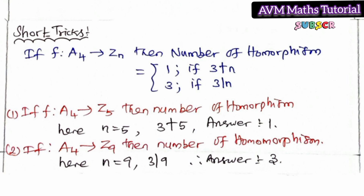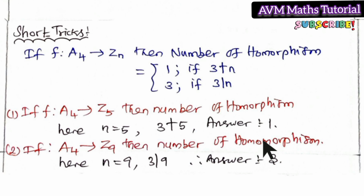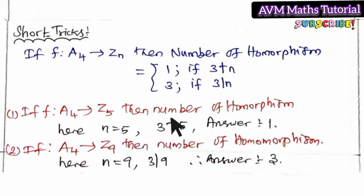Next example: suppose F is from Z4 to N. The number of homomorphisms is 3, provided 3 is divisible by N. That is, 3 is divisible by N, so the number of homomorphisms is 3. This is the correct answer.